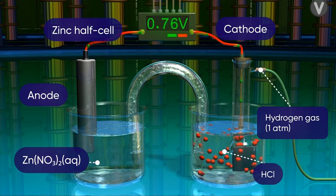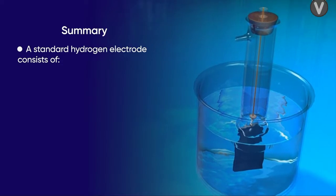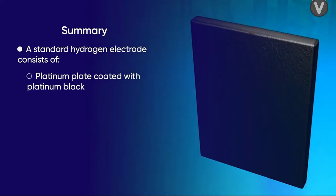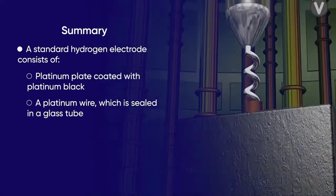To summarize, we have learned a standard hydrogen electrode consists of a platinum plate coated with platinum black. The platinum plate is connected to a platinum wire which is sealed in a glass tube.